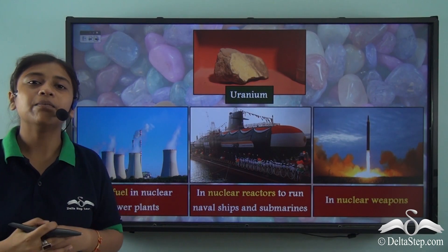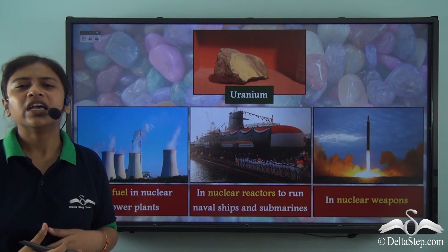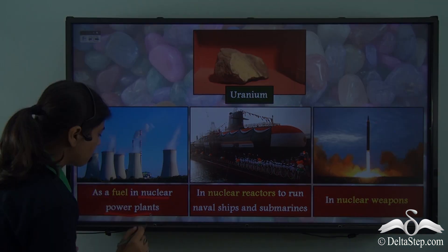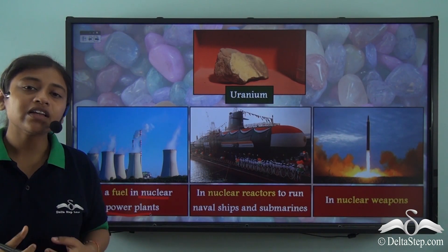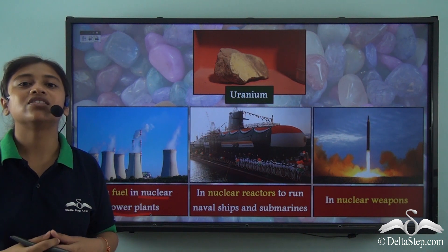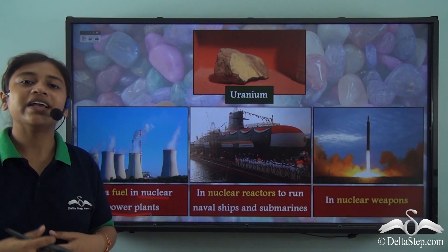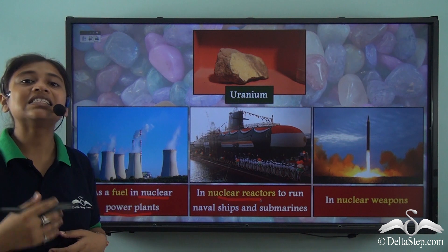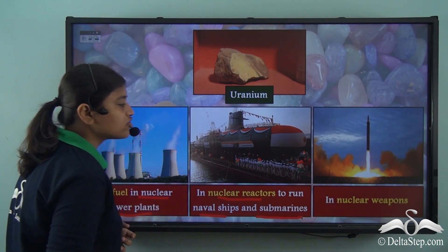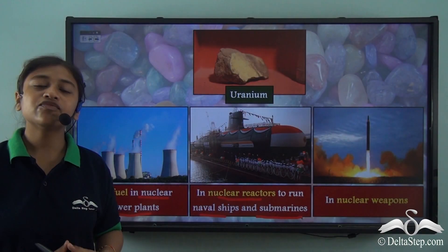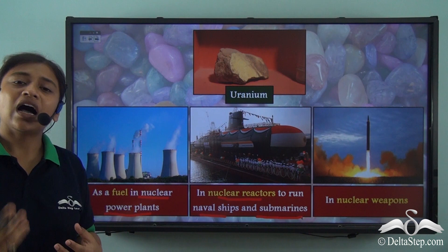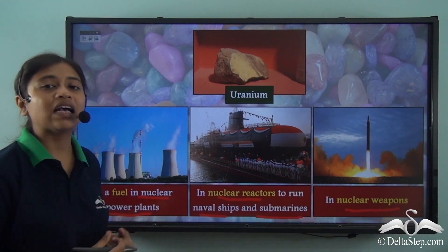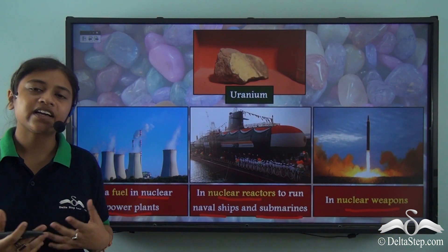Now let us look at another important metallic mineral — Uranium. Uranium is widely used as a fuel in nuclear power plants, helping us obtain nuclear energy which is a renewable source of energy and causes less pollution. Uranium is also used in nuclear reactors which are used to run naval ships and submarines, playing a very important role for the shipbuilding industry and the naval forces of any country. It is also used in nuclear weapons, giving it military importance.